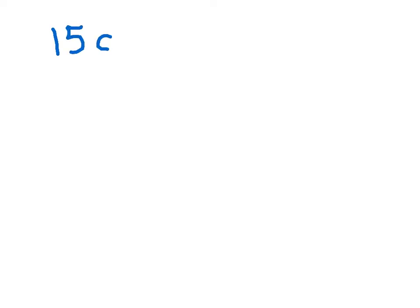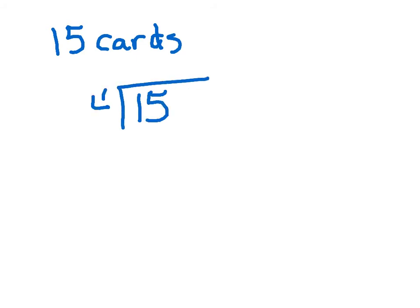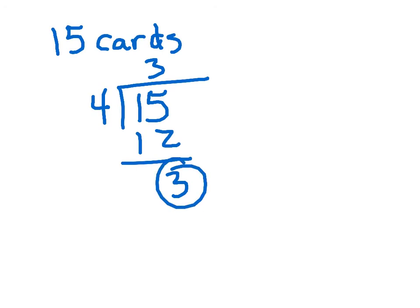Let's try a couple quick ones. Let's say you have 15 cards, and you are going to put four cards in an envelope. How many envelopes are you going to end up needing, and how many would be left over? Take those 15 cards, divide into four envelopes. You know that four goes into 15 three times, which is 12, with three left over. However, this remainder always has to be less than the divisor. If it's not, you could probably put one more in each one of those envelopes.